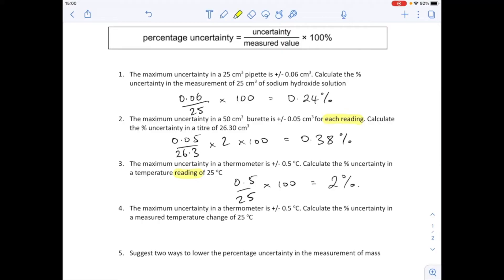Question four now. We've got a temperature change now of 25 degrees C. So there'll be two thermometer readings, an initial and a final one that's got us the 25 degree change. So it could be a calorimetry experiment or something like that.